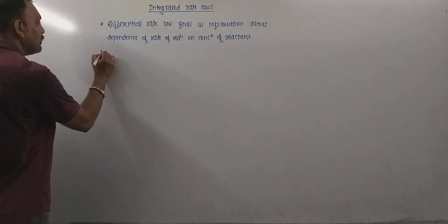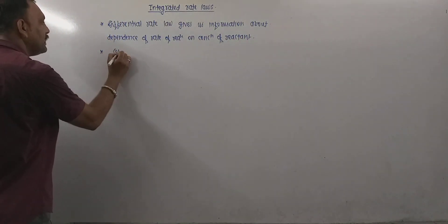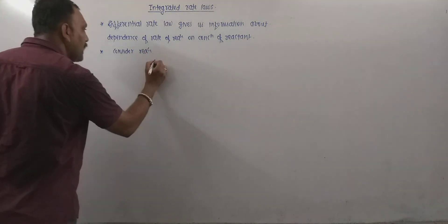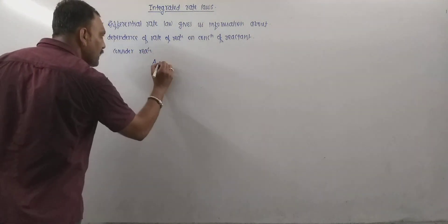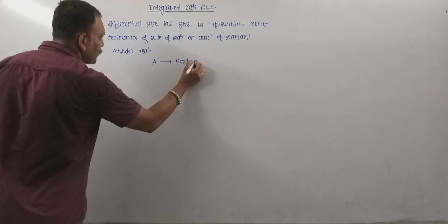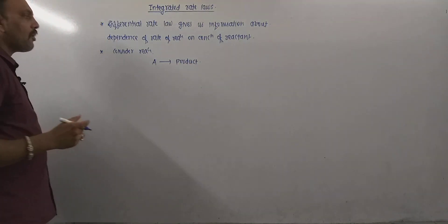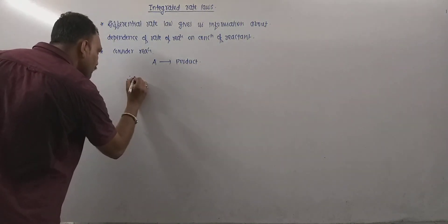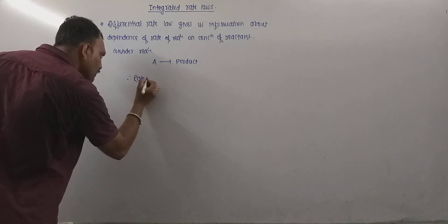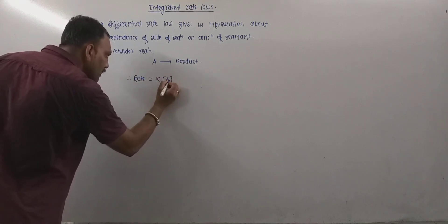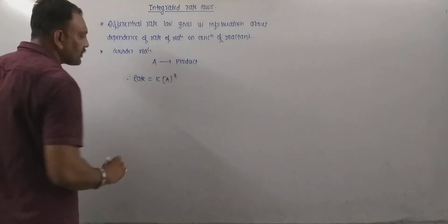Let me explain this first. Consider a hypothetical reaction of the type: A gives product. For this, the rate law can be given as: rate is equal to K into concentration of A to the power X.